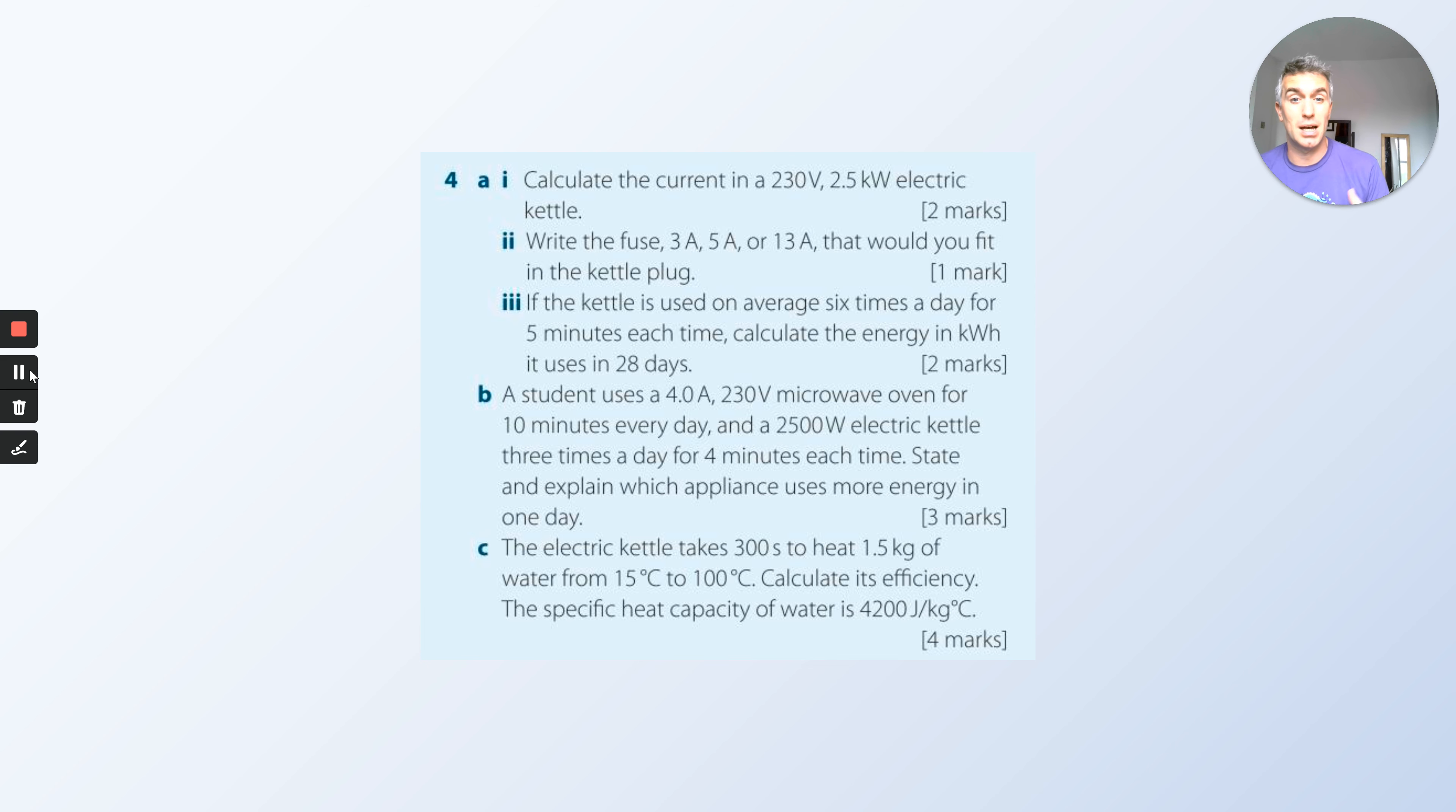More calculations. Calculate the current in a 230 volt, 2.5 kilowatt electric kettle. Kilowatt, like kilograms, is a thousand, so how many watts in a kilowatt? You've got a power, you've got a voltage, it wants you to work out the current.